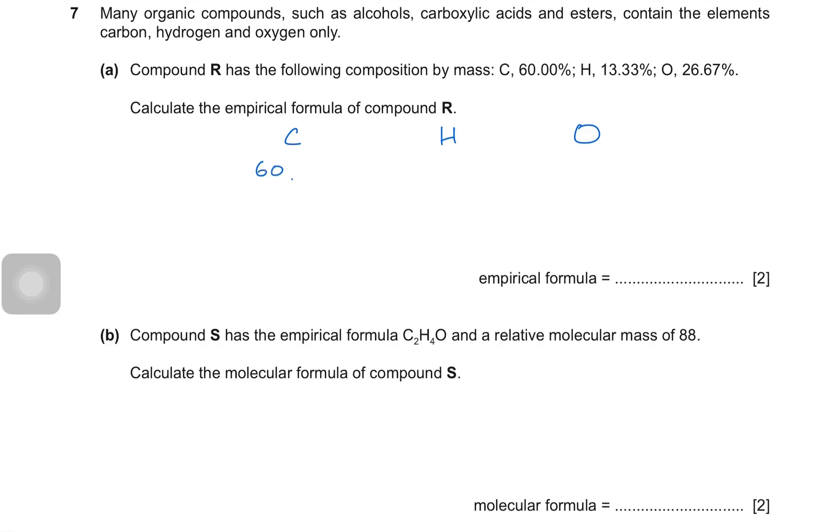Compound R has the following composition by mass. And now they want us to calculate the empirical formula. So for empirical formula, we have carbon, hydrogen and oxygen. Carbon is 60.0%, hydrogen is 13.3% and oxygen is 26.67%. In the first step, we find their moles. So we divide the percentages by their atomic masses. We'll find the moles. So 60 divided by 12 is obviously 5. 13.3 divided by 1 is obviously 13.3 itself. And 26.67 divided by 16 is going to be 1.67.